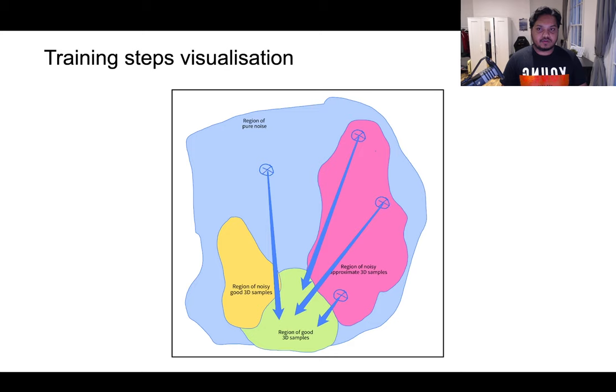By using the naive training method, we are essentially teaching the network how to go from various noisy versions of the approximate 3D feature voxel grids towards the clean and fully formed 3D grids. The network essentially learns to move the 3D samples from the pink and blue regions towards the green region in the training step.